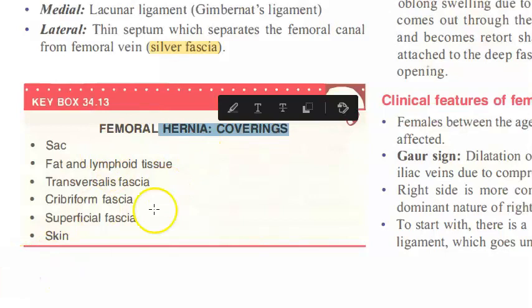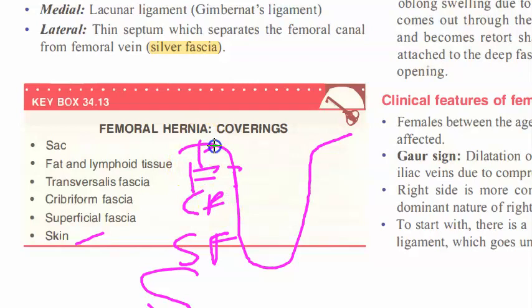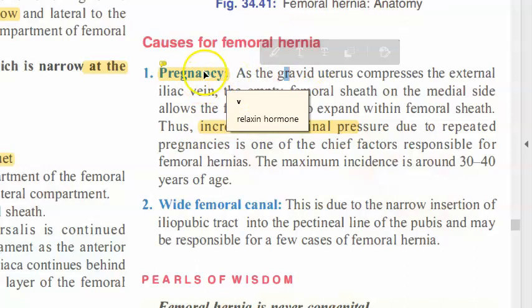Regarding the coverings of the femoral hernia sac: from outside inward, you have skin, superficial fascia, cribriform fascia, fascia transversalis, fat, lymphoid tissue, and finally the hernial sac itself.